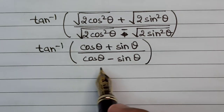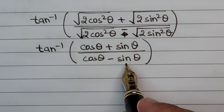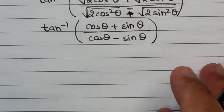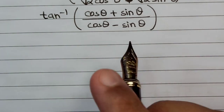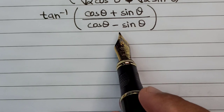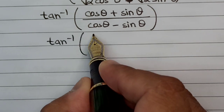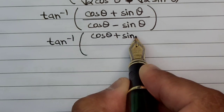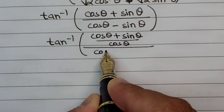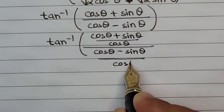This is moving towards the tan(A+B) format, but we need to convert sine and cosine into tan. That can be done by dividing both numerator and denominator by cos θ, giving tan inverse of (cos θ + sin θ)/cos θ divided by (cos θ − sin θ)/cos θ.